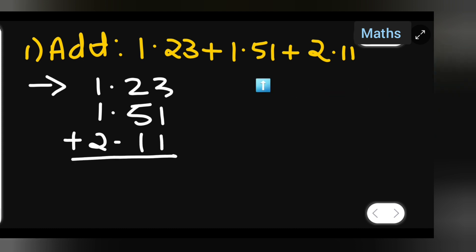I have written 1.23, after this I have written 1.51, then 2.11. 3 plus 1 plus 1 will give you 5, so write down 5. After that, 2 plus 5 is 7, 7 plus 1 will be 8, so write down 8.